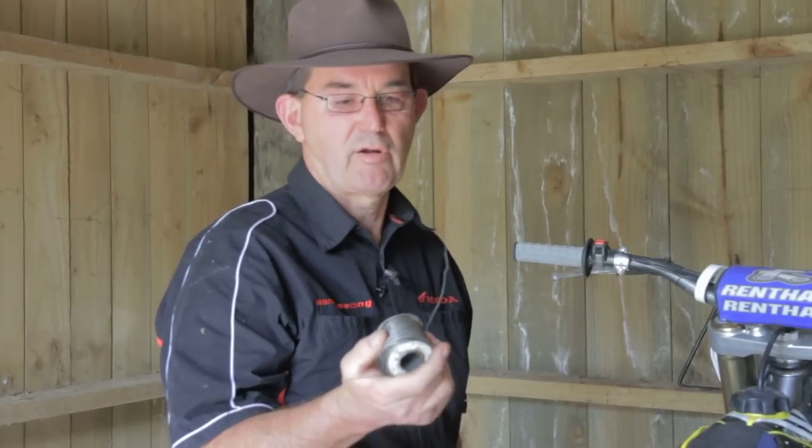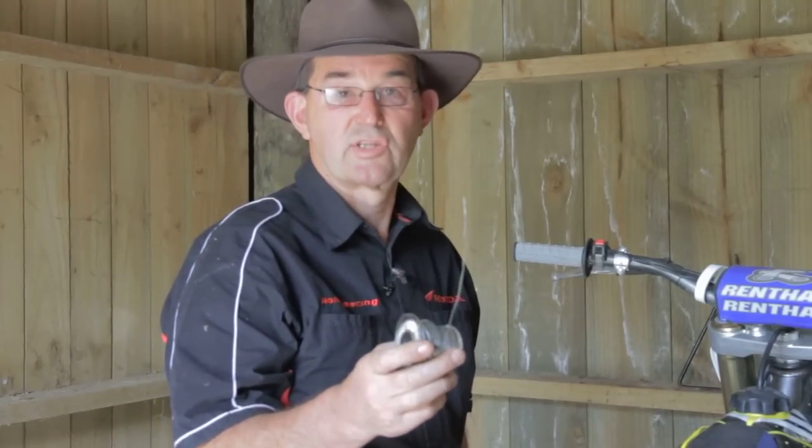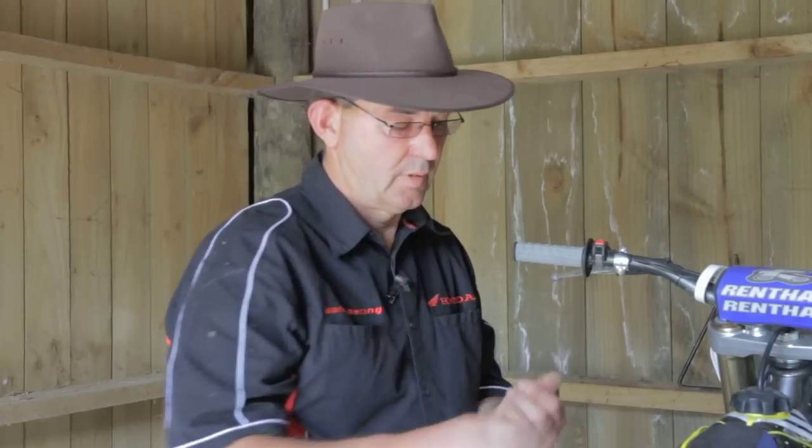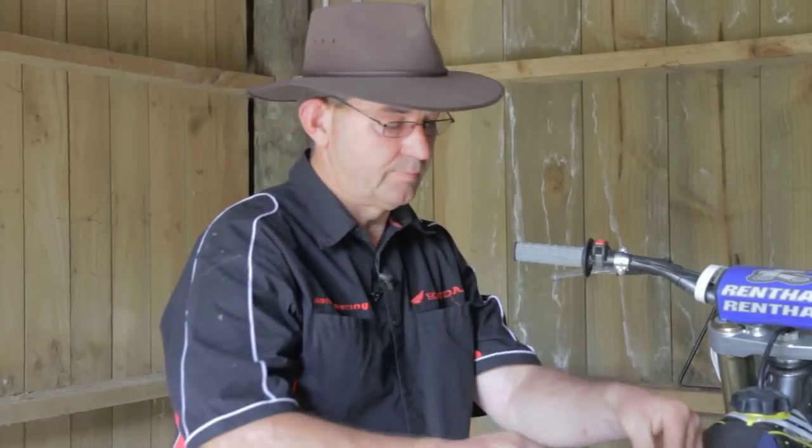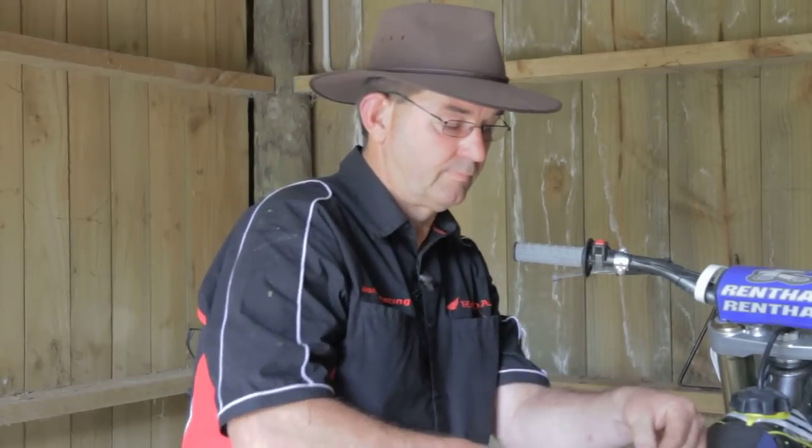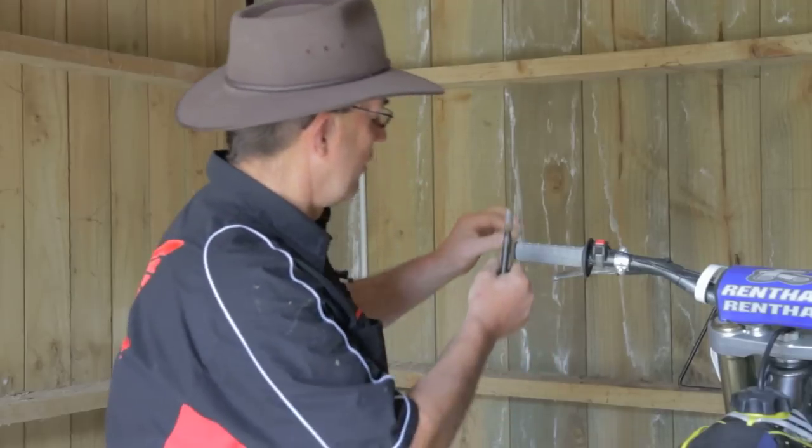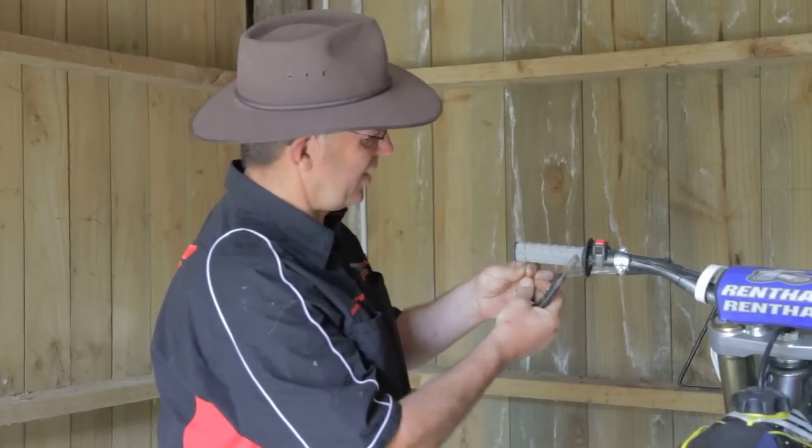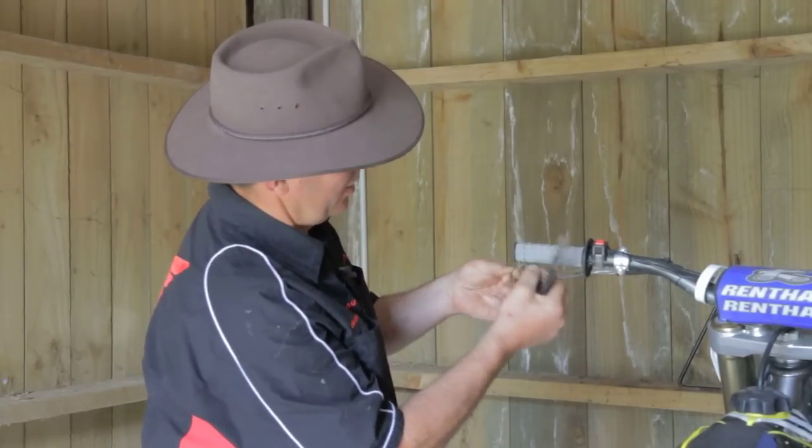So we now go onto using the lock wire. I use the aircraft grade stainless steel lock wire. You cut off a small portion. Wrap it around the end, towards the end of the grip. Twist it around.